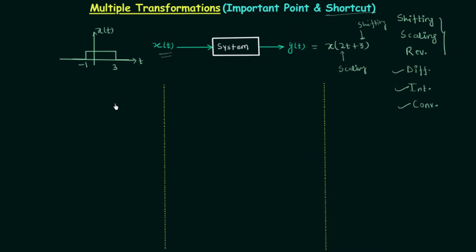There are three different ways to solve this question. In the first method, we will first perform time scaling then time shifting. In the second method, we will first perform time shifting then time scaling. In the third method, which is the shortcut, we will directly obtain the waveform. Let us begin with method number one.